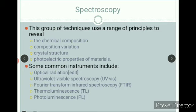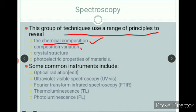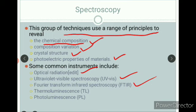We also have spectroscopy techniques. This group of techniques uses a range of principles to reveal the chemical composition of a material. You can know the composition variation — what percentage of each chemical is involved — know the solid state and crystal structure, and also know the photoelectric properties. If you're interested in how a material behaves when light or photons fall on it, you can explore these properties. Instruments used include ultraviolet spectroscopy, Fourier transform spectroscopy, thermal luminescence, and photoluminescence.